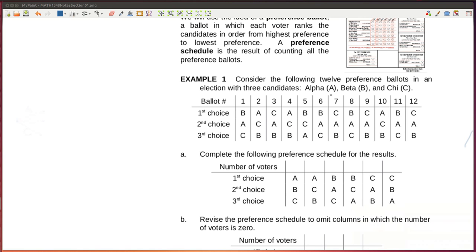In a previous video we looked at developing a preference schedule. Remember in that case there were 12 different people who were listing their preferences for A, B, and C, and so their first, second, and third choices were listed.